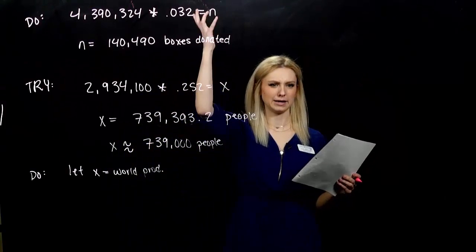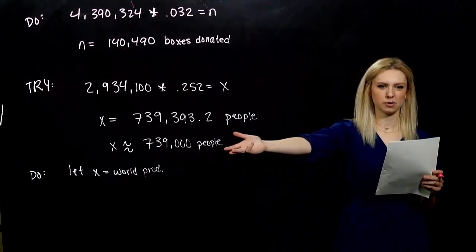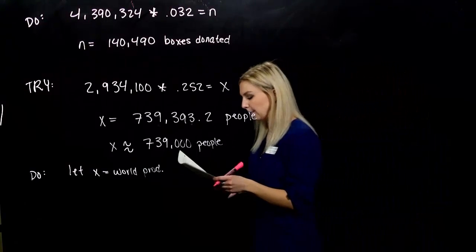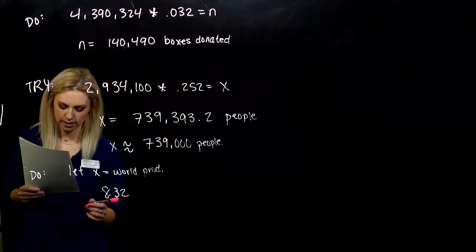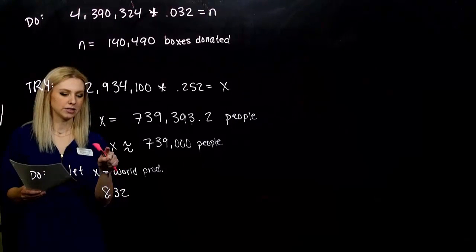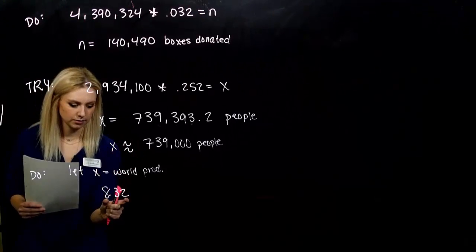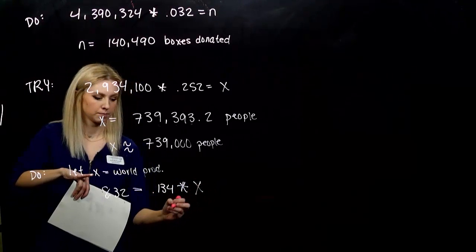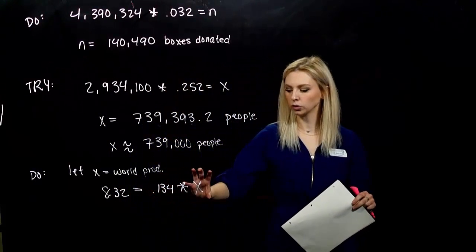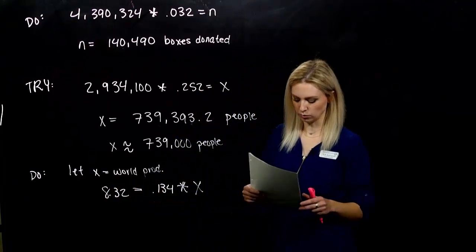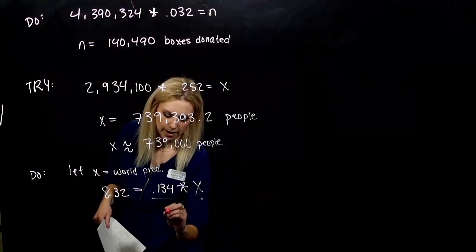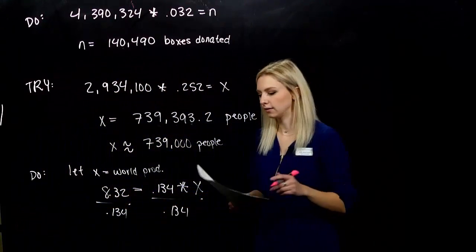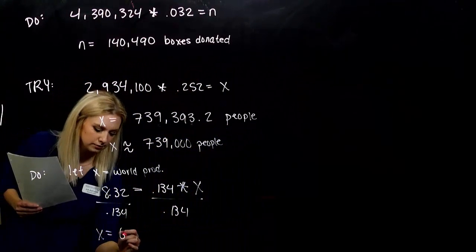So, before, our amount spit out on its own, so we didn't really care about labeling the variables until we were at the end. But in this case, it's a little bit more complicated. Because it's not an amount, we're looking for the base. So, let's set it up. We have 8.32 million cars were made in the U.S. This is 13.4% of what number? So, this is 13.4% of the world production is 8.32. So, we need to solve for X. What do we have to do? Divide both sides by 0.134.